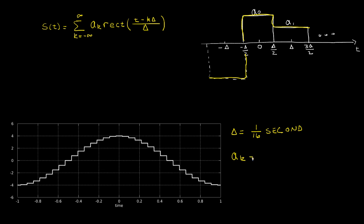But it turns out that we've made our coefficients equal to 4 times the cosine of 2 pi times k delta over 2.